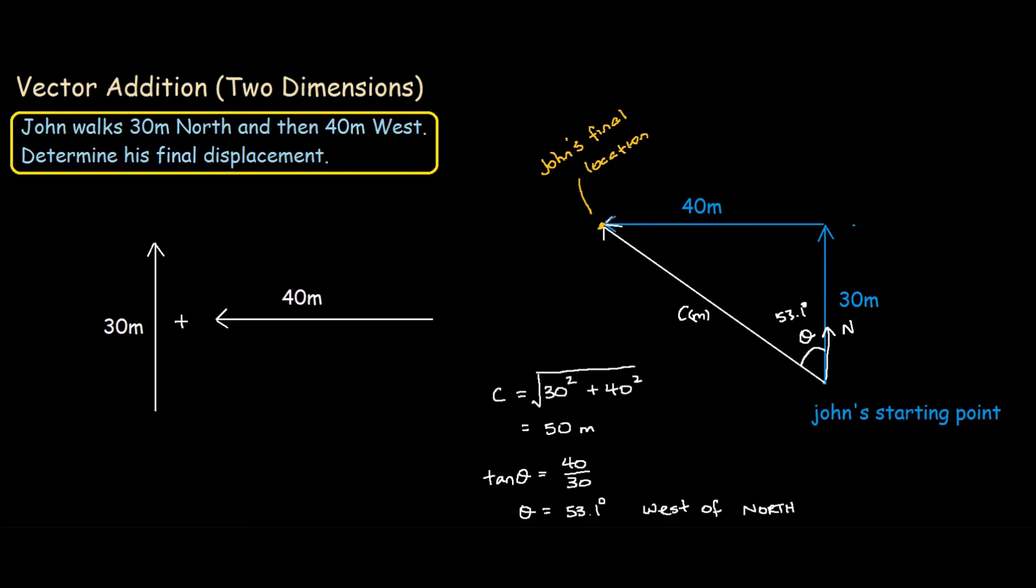So John's final location is 50 meters at 53.1 degrees west of north from his starting location.